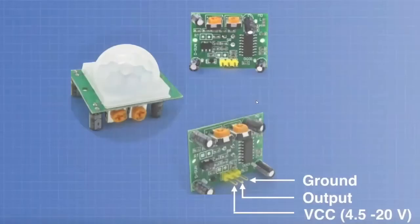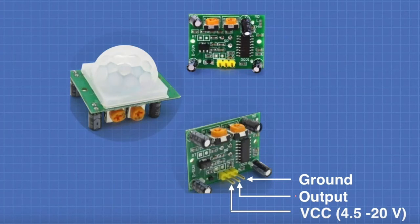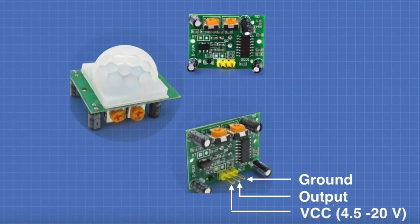To connect the PIR sensor, there are three pins. One pin is for ground, the middle one is output, and the VCC is for voltage. You take VCC straight to the board at 5 volts. The output pin is what you connect to one of the Arduino pins — specifically a digital pin — so you can program it to do things based on the detected movement.